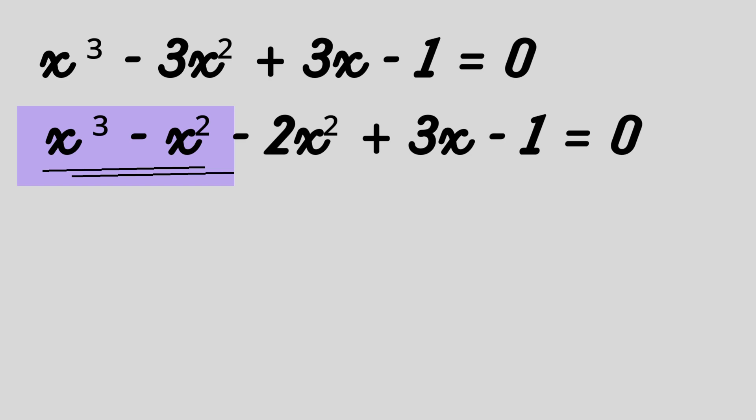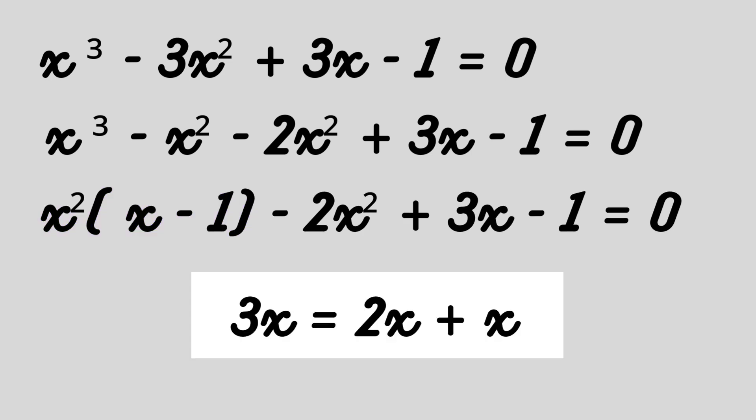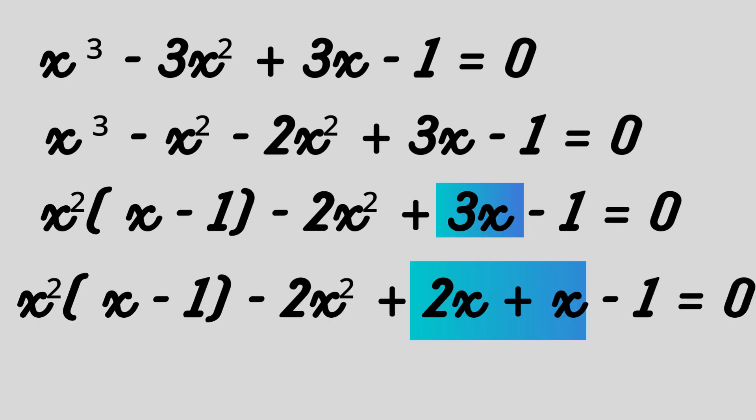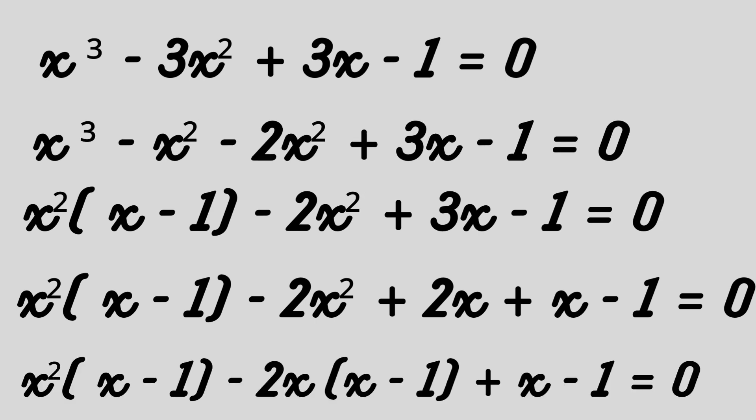Taking x² as common from the first two terms x³ - x², we get: x²(x - 1) - 2x² + 3x - 1 = 0. Now writing 3x as 2x + x, the equation becomes x²(x - 1) - 2x² + 2x + x - 1 = 0. From the terms -2x² and 2x, taking out -2x as common, we get: x²(x - 1) - 2x(x - 1) + (x - 1) = 0.